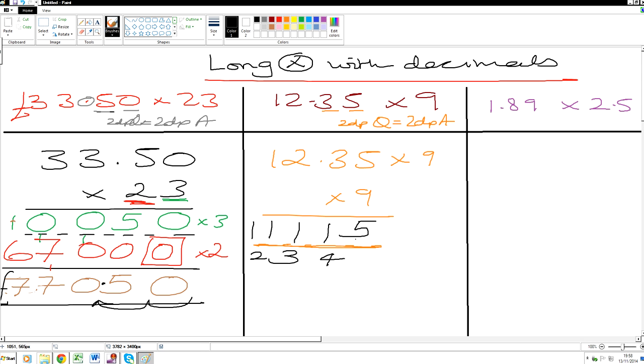So we have 2 decimal places in our answer. So 1, 2. The final answer is going to give us 111.15. Next question.